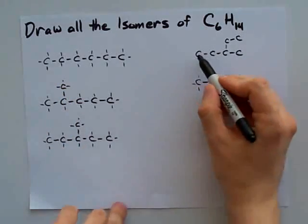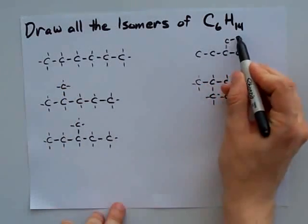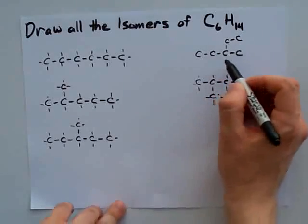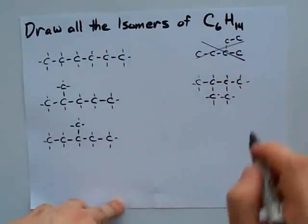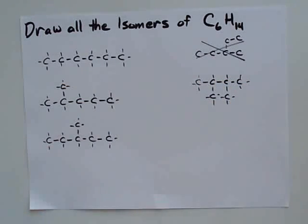The fourth structure which I'm showing now is exactly similar to the third structure we have already drawn, so this fourth structure is not an isomer of C6H14. We can cancel this structure. Now try to do some modification in the structure.